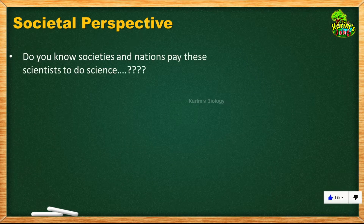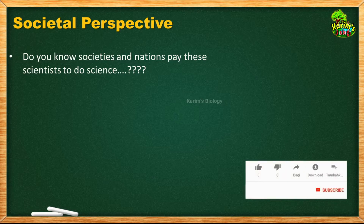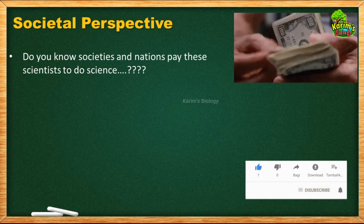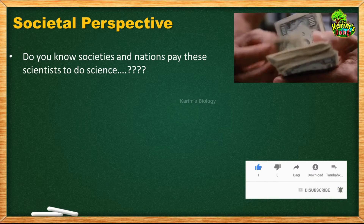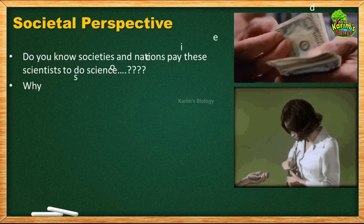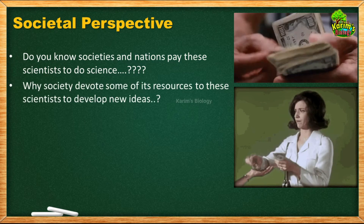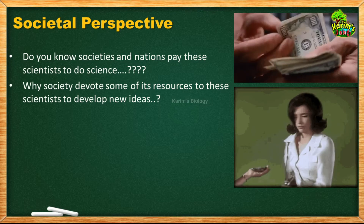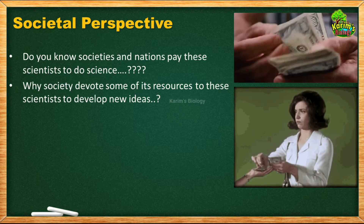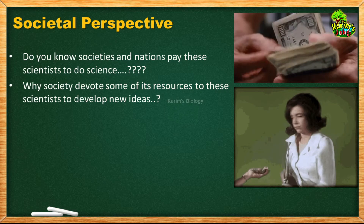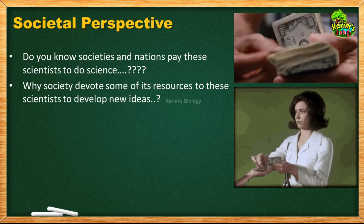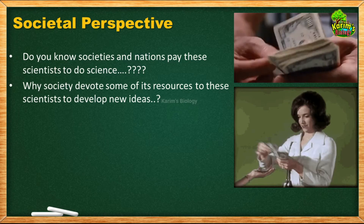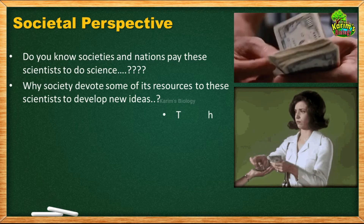Now let us find out about the societal perspective. Societies and nations pay scientists to do science. They pay money to scientists because they want them to make new discoveries and inventions. Society devotes some of its resources to scientists to develop new ideas. The government, elected by the people, provides money to scientists funded by taxes paid by people in society — so people in society are indirectly paying scientists to develop new ideas.